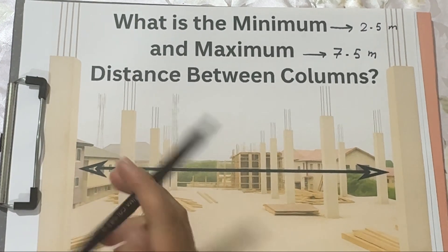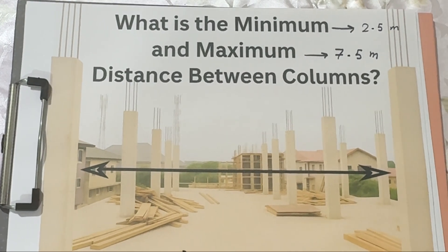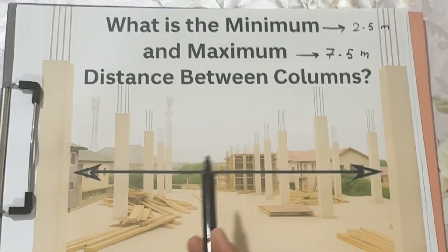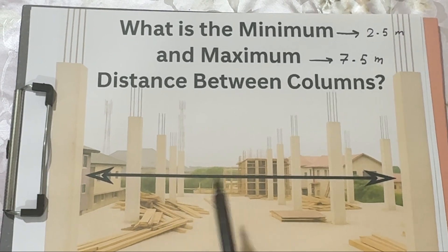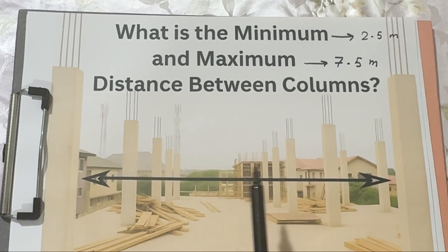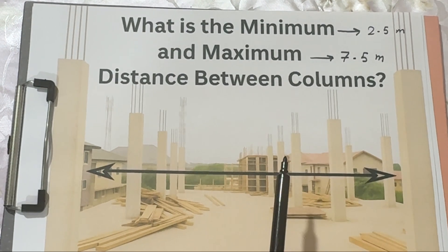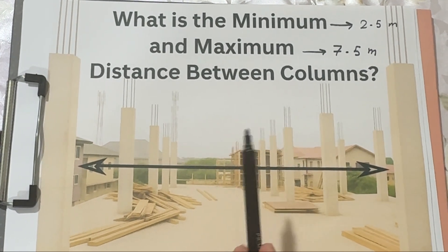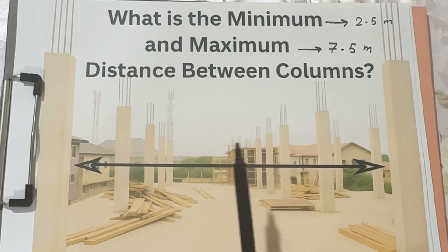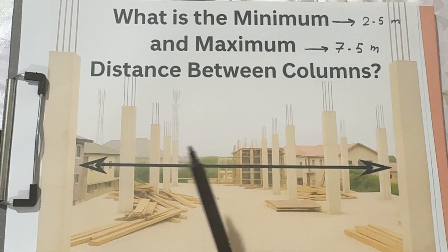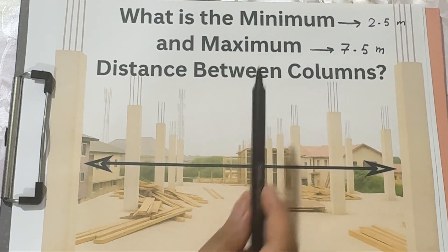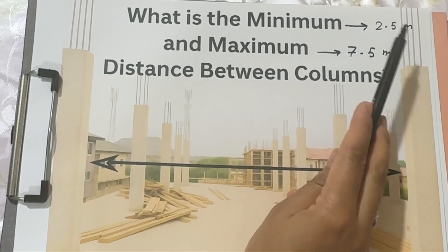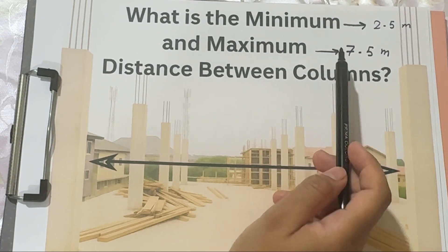Part 5: Cost and design balance. Here's something interesting: when you increase the distance between columns, you might save on the number of columns, but the beams and slabs between them need to be thicker and stronger. So there's always a trade-off between material cost and architectural flexibility. Engineers try to balance this to achieve an economical and safe design.